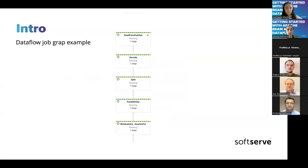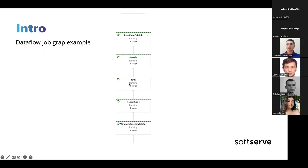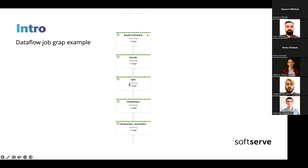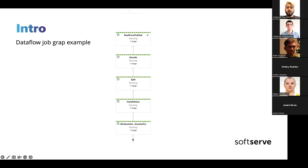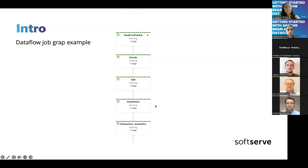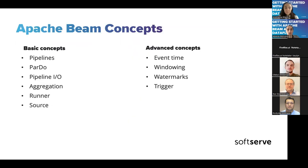Here is a typical graph of a pipeline job in a Google Cloud environment. As an example: we read data from Pub/Sub, decode it, validate it, split by some transformation, and execute additional steps. We'll go deeper into this later in the demo, where I'll show you features from Dataflow you can leverage.